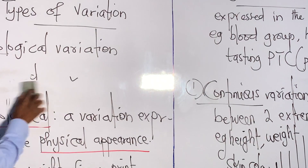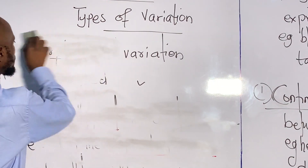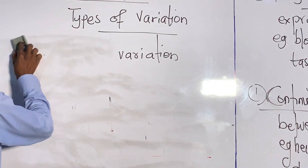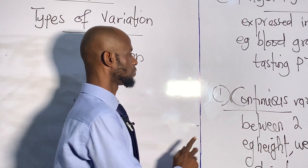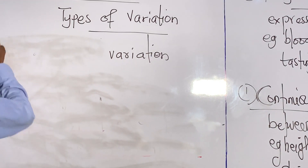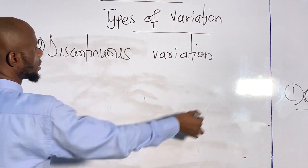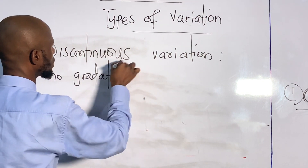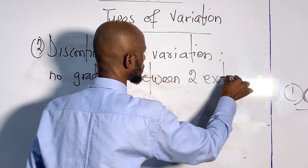Now let's go to discontinuous variation. From the word discontinuous, we say it is the type of variation in which there is no gradation or transition between the two extremes.